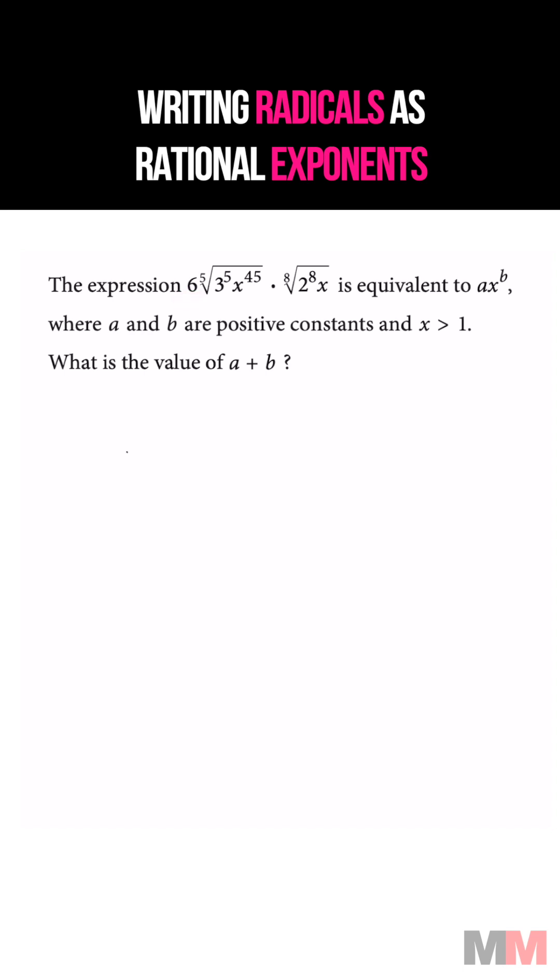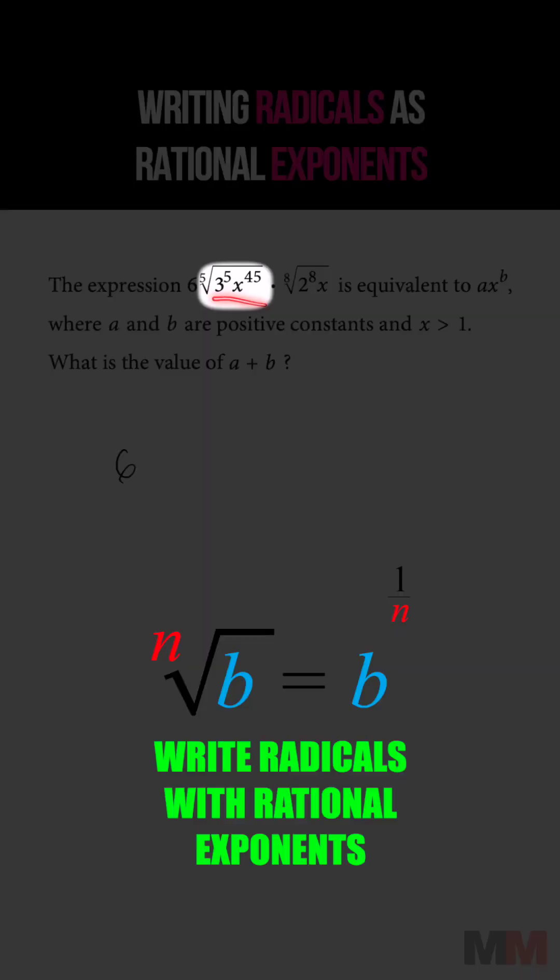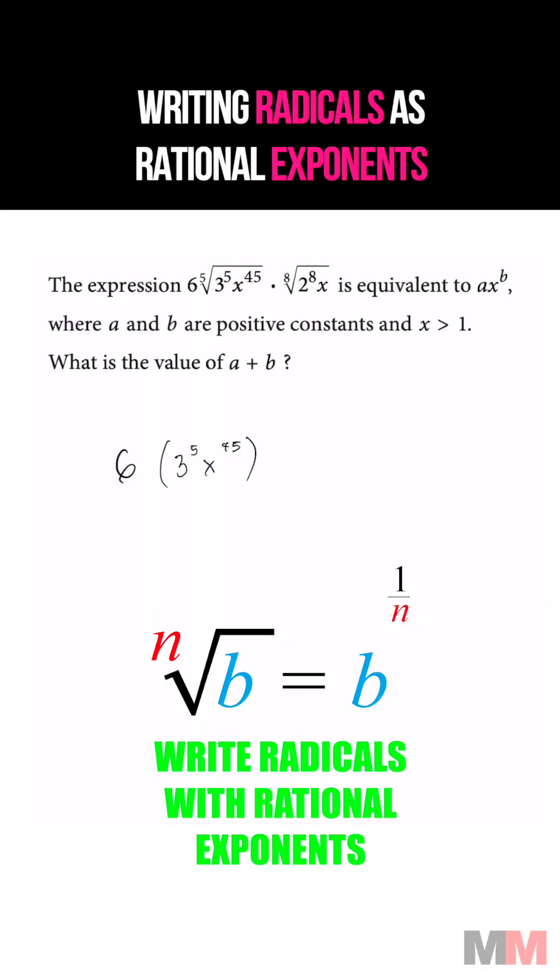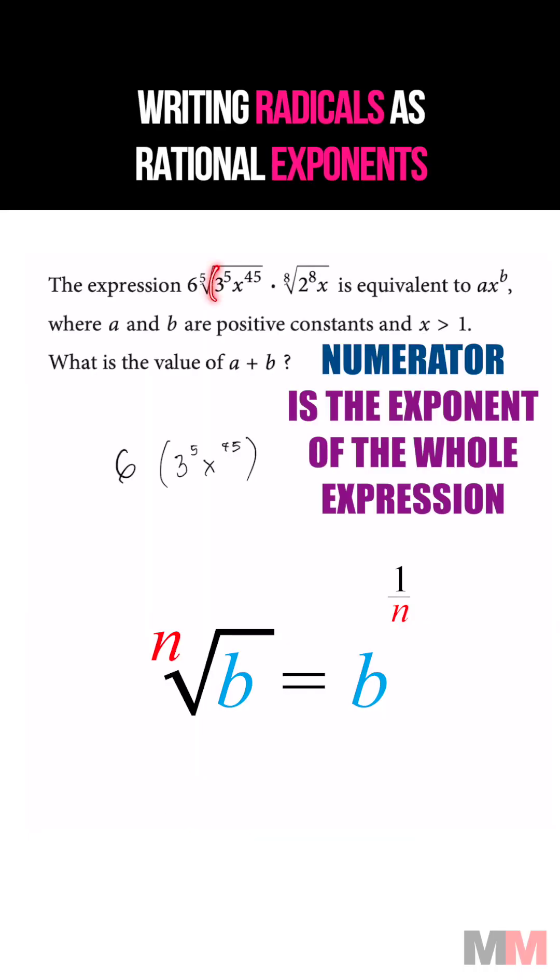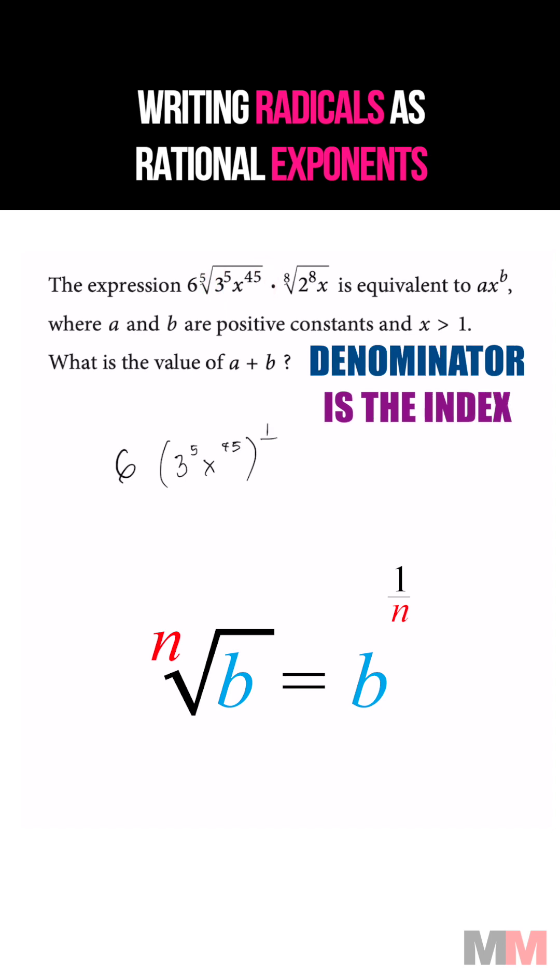Leave that 6 alone, but this expression we're going to put in parentheses. Now we can raise that to a rational exponent, where the numerator is the overall exponent of this expression, which is 1, and the denominator is going to be the index, which is 5.